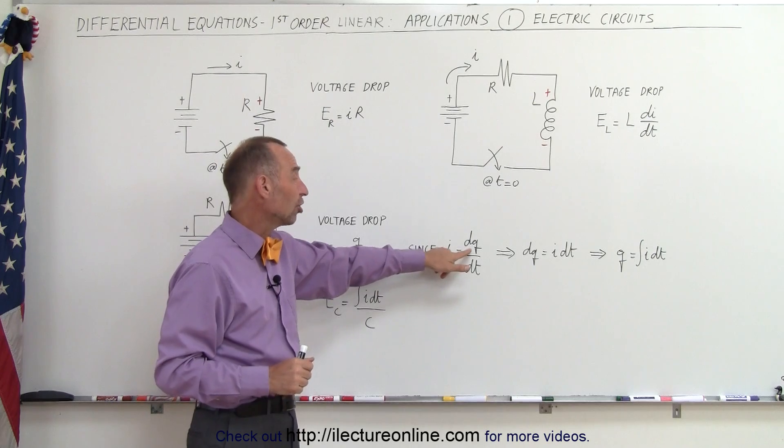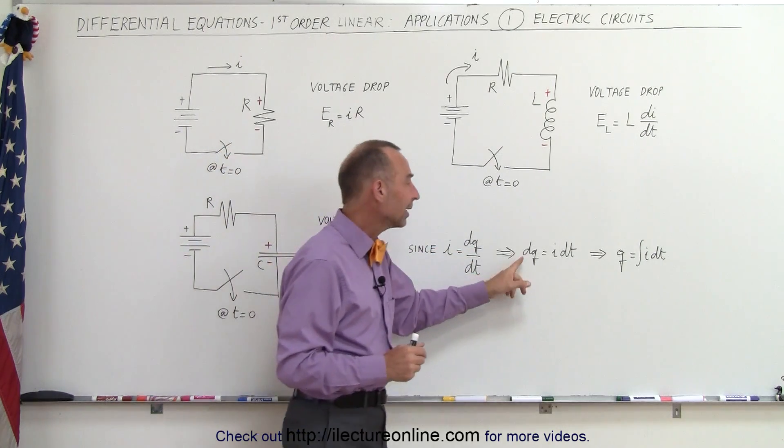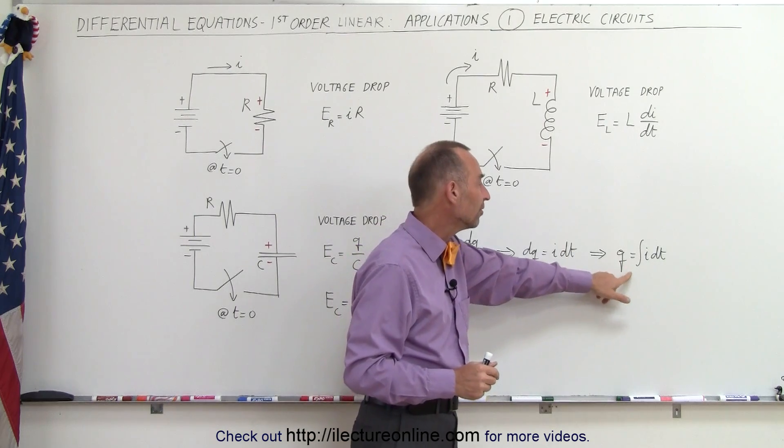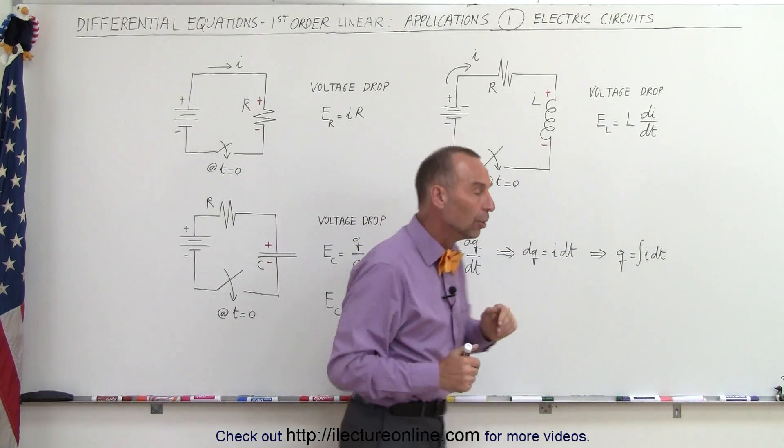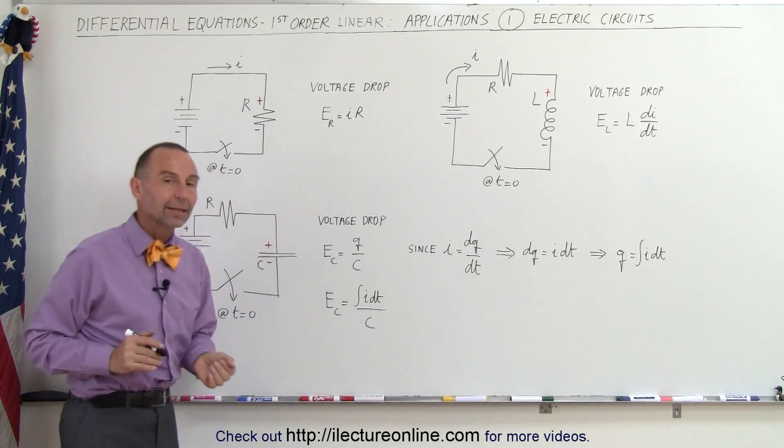Since we know that current equals the change in charge over time, and we separate the variables, we can say that the charge Q equals the integral of the current times dt. So the longer the current flows, the more charge accumulates on the capacitor.